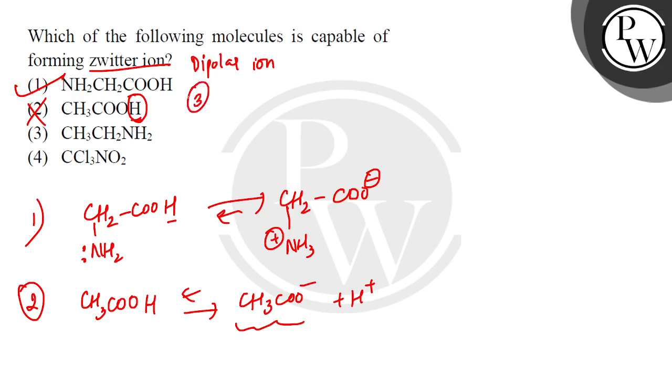In the third option, CH3CH2NH2. The nitrogen has a lone pair, so this can accept a proton to form CH3CH2NH3+. This can be in the form of a cation, but it cannot form a zwitterion.